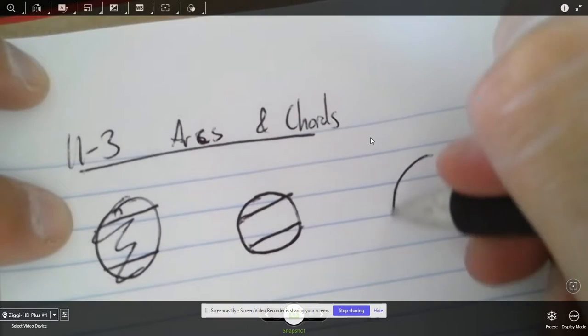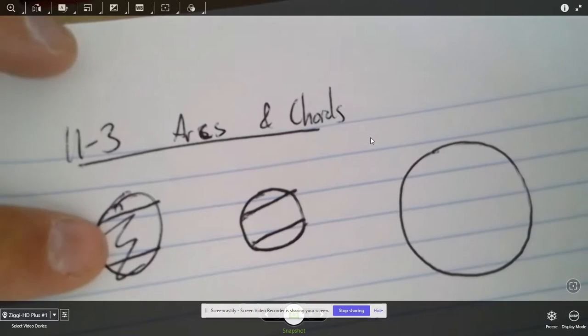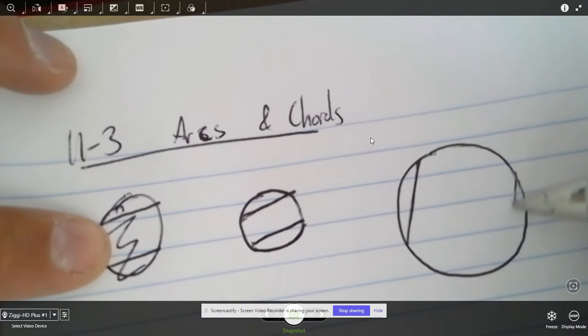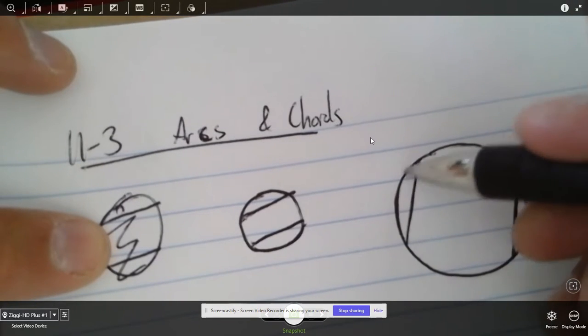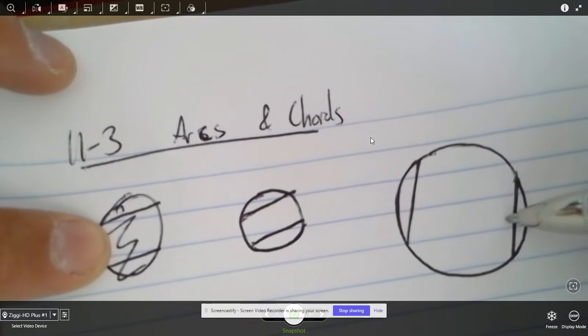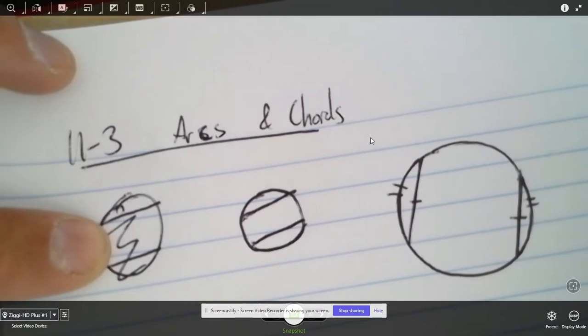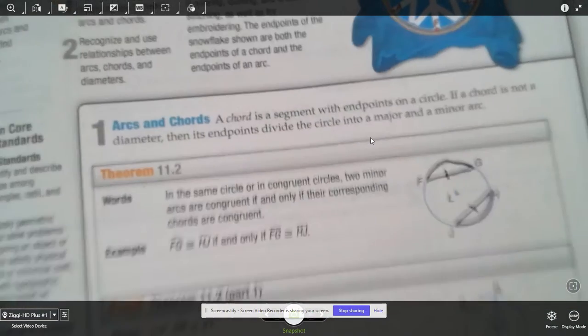I'll try another one over here, a bigger circle maybe. I can never get these. Oh, that's a pretty good circle, right? Let's do this chord over here, and then this chord over here on this side, and they're about the same length. And guess what? Their chords look to be about the same. So that's what the theorem is saying.